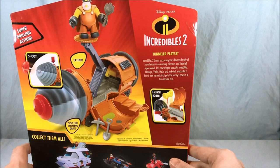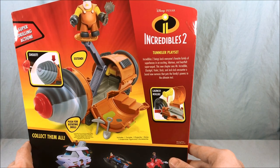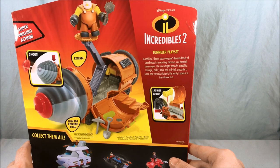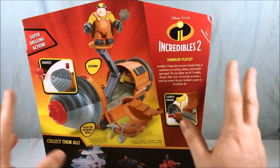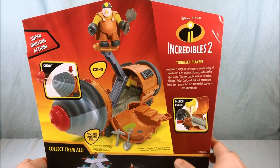This new chapter sees Mr. Incredible, Elastigirl, Violet, Dash, and Jack-Jack encounter a brand new Nemesis that puts the family's powers to the ultimate test. It's the same little blurb that's on the back of literally every package of these Junior Super toys.